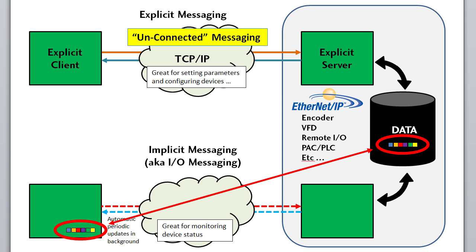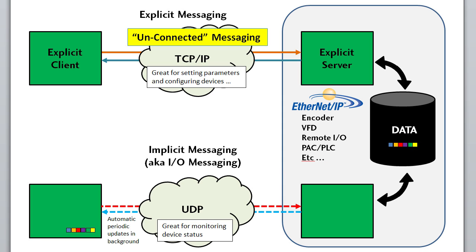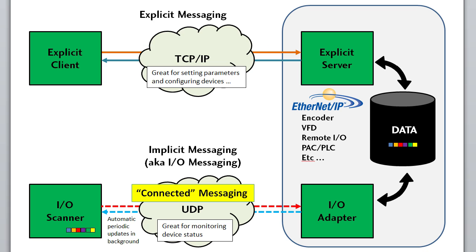This implicit messaging is done using UDP, and because this is different from the explicit nature of the client-server pair, we use different names for these. We have the implicit scanner — which we call the I/O scanner for short — and the I/O adapter. This is referred to as connected messaging, and the explicit approach is referred to as unconnected messaging.